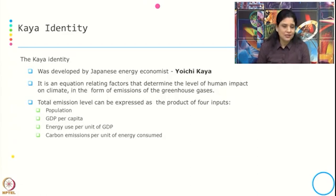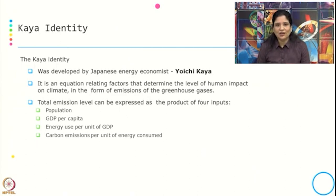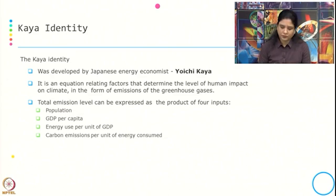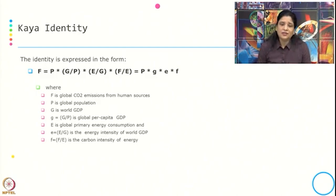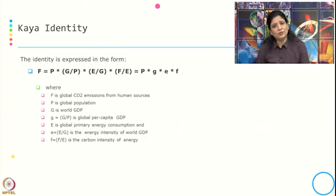Going to the next model to understand the linkage between environment, economy, and human, we will use the Kaya Identity. It was developed by Japanese energy economist Kaya, and the equation relates factors that determine the level of human impact on climate in the form of greenhouse gases. The total emission level can be expressed as the product of four inputs: population, GDP per capita, energy use per unit of GDP, and carbon emission per unit of energy consumed. The identity is expressed as F, which is a function of P (global population), G (world's GDP), and E (global primary energy consumption), where F is the global CO2 emission from human sources.